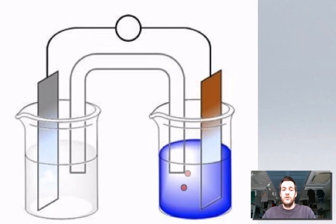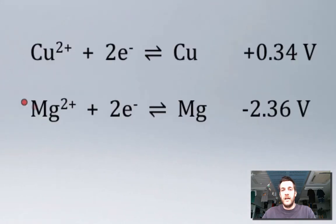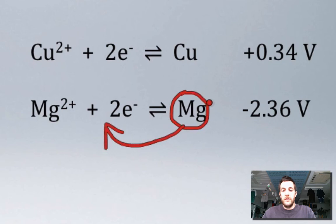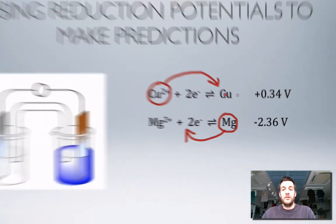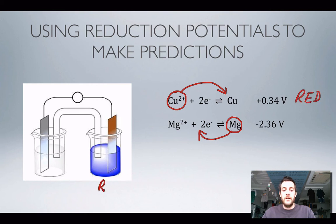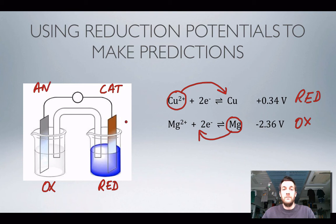Looking at the reduction potentials for copper in a solution of copper ions and magnesium in a solution of magnesium ions: the magnesium reduction potential is more negative, so this equilibrium lies further over to the electron side. The magnesium atoms will turn into magnesium ions whilst the copper ions will turn into copper atoms — using the clockwise rule with the more positive one on top. The copper is being reduced — gaining electrons — so reduction is happening at the copper system, making it the cathode, and oxidation is happening at the magnesium system, making it the anode.